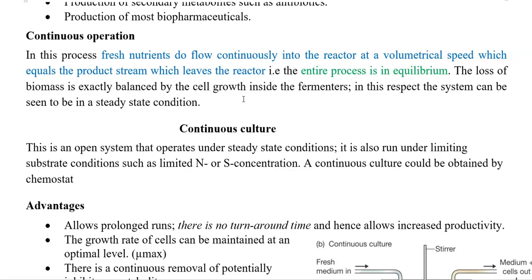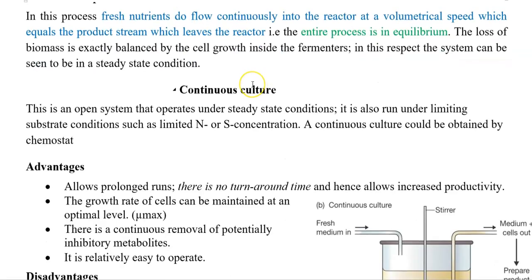That is, the amount of nutrients flowing inside equals the amount of spent nutrients taken out. During the operation, the loss of biomass with the spent liquid can be balanced by cell growth inside the fermenter. This system represents a steady state of cultivation. It is also called an open system, whereas batch culture is referred to as a closed system. Thus, it operates under steady state conditions.